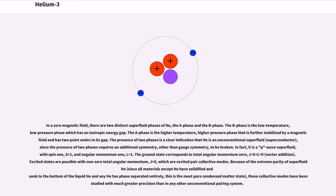In a zero magnetic field, there are two distinct superfluid phases of He3, the A phase and the B phase. The B phase is the low-temperature, low-pressure phase which has an isotropic energy gap. The A phase is the higher-temperature, higher-pressure phase that is further stabilized by a magnetic field and has two point nodes in its gap. The presence of two phases is a clear indication that He3 is an unconventional superfluid superconductor, since the presence of two phases requires an additional symmetry, other than gauge symmetry, to be broken. In fact, it is a P-wave superfluid, with spin 1, S equals 1, and angular momentum 1, L equals 1.